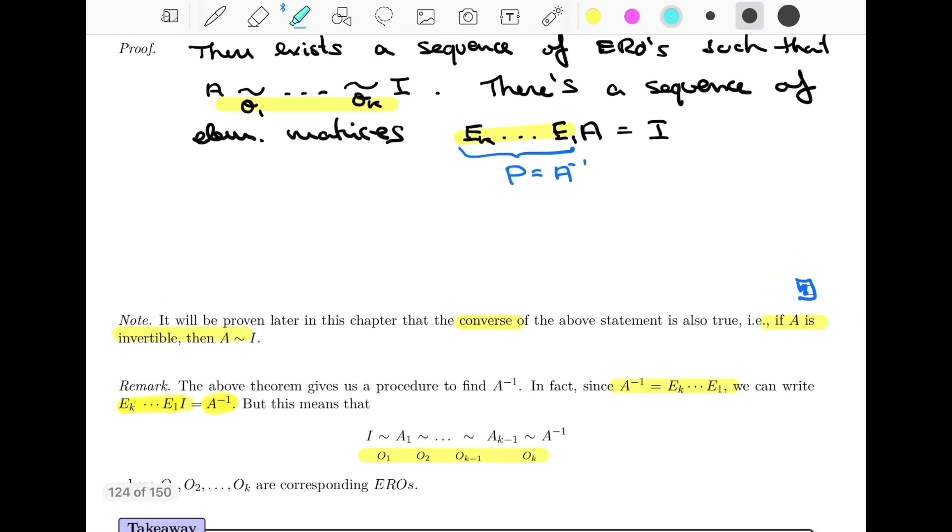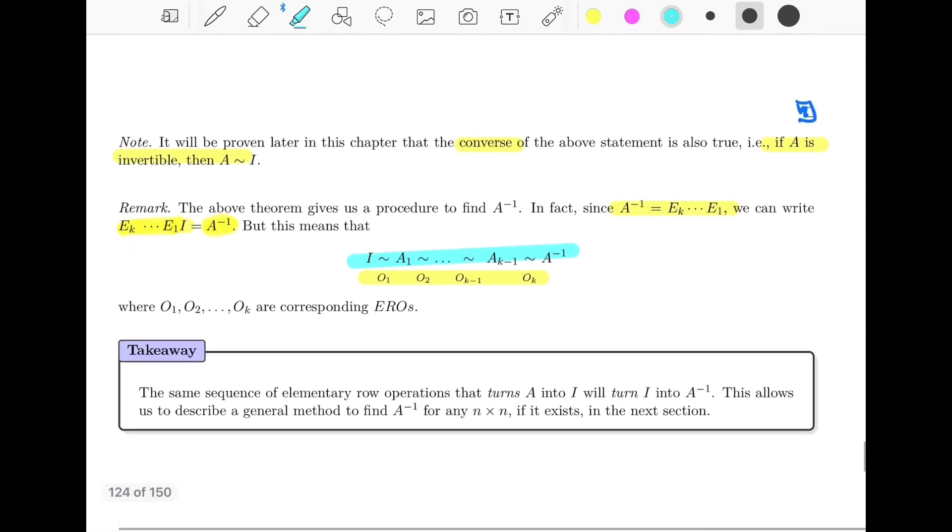And so you notice that this sequence, so let me attract your attention to this. Where did this sequence come from? Well, this sequence, O1 to OK, was the sequence that turned A into I? Well, what we're saying here is that that same sequence of elementary operations turns I into A inverse, right?